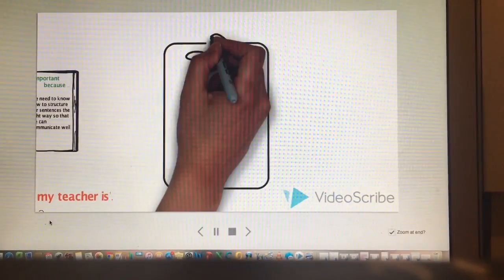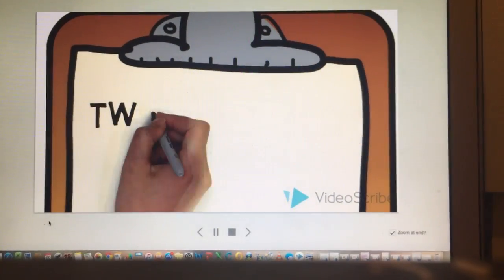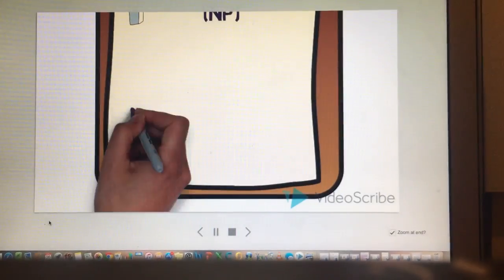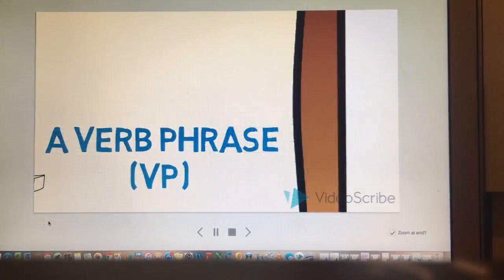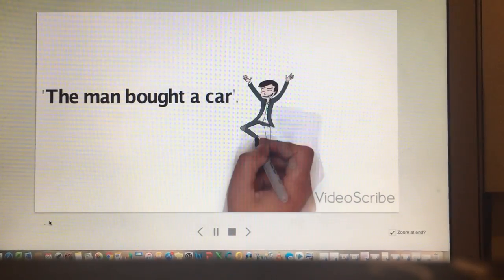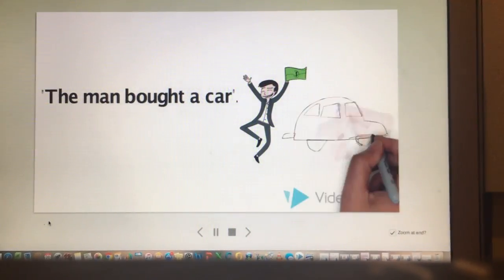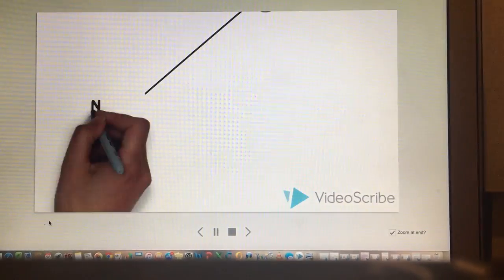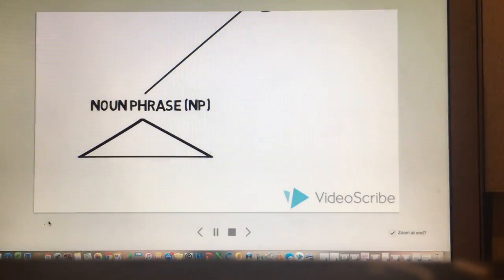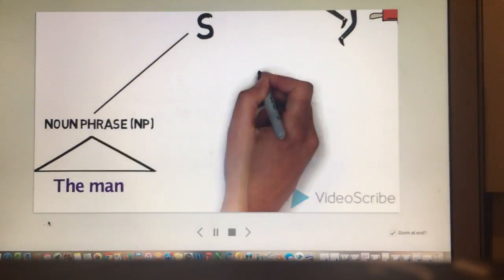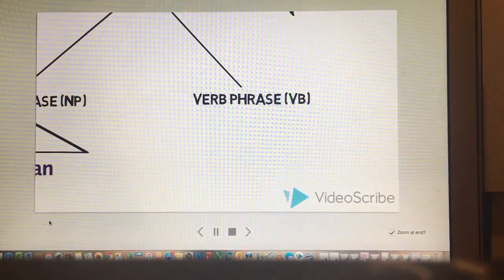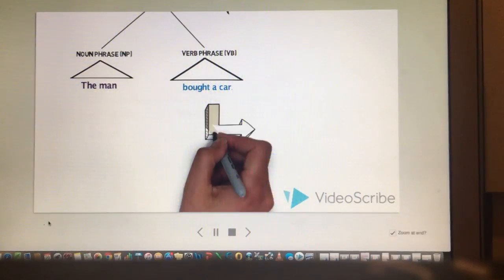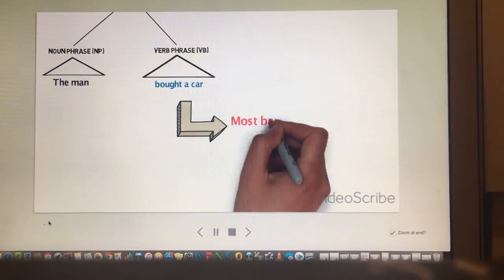There are two main parts that make up a sentence. In the English language, most sentences are structured with a noun phrase and a verb phrase. Take a look at this sentence: The man bought a car. If you take a look at this sentence, you will notice it's broken down into two main parts: the noun phrase referring to the man, and the verb phrase which is bought a car. This sentence is the most basic sentence structure in the English language. It has one subject, a noun, and one verb.